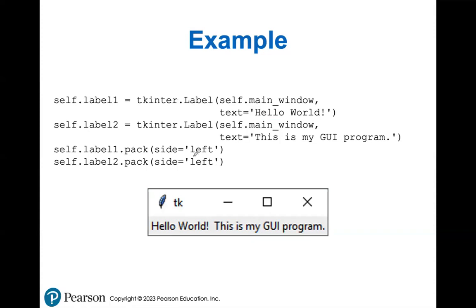If we specify a side — in this case we're specifying we want it on the left — everything goes on the left. 'Hello world' and then 'this is my GUI program' follows and they're both packed to the left on the same line of our window.